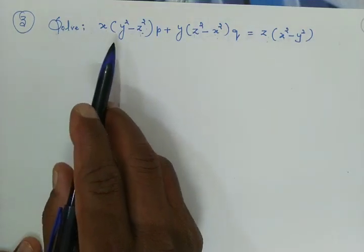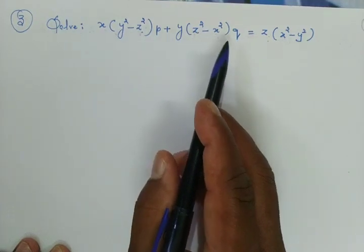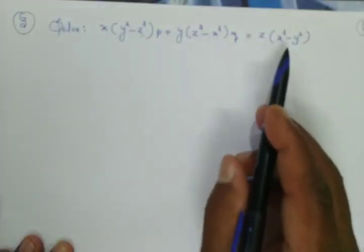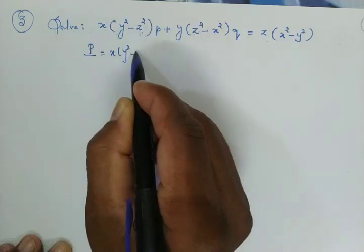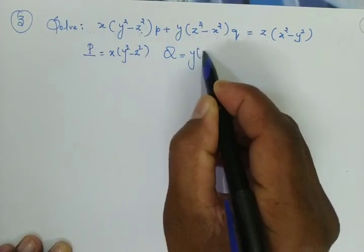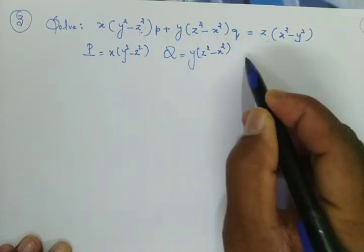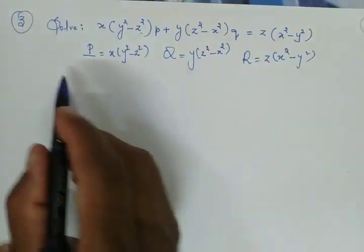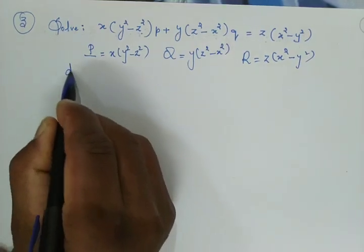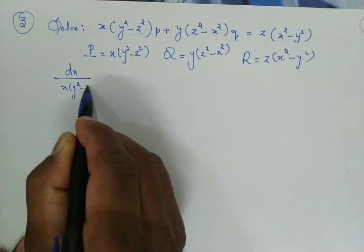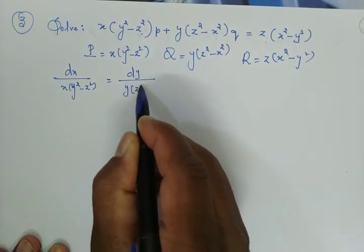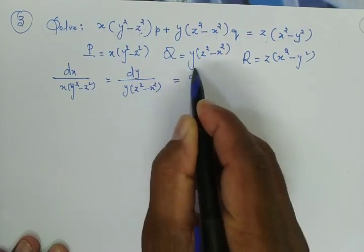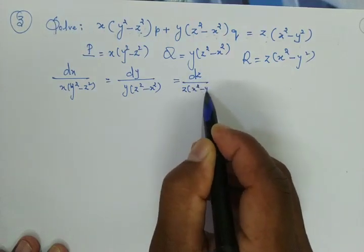The given problem is x(y² - z²)p + y(z² - x²)q = z(x² - y²). Here, capital P = x(y² - z²), capital Q = y(z² - x²), and capital R = z(x² - y²). The auxiliary equation is dx / [x(y² - z²)] = dy / [y(z² - x²)] = dz / [z(x² - y²)].